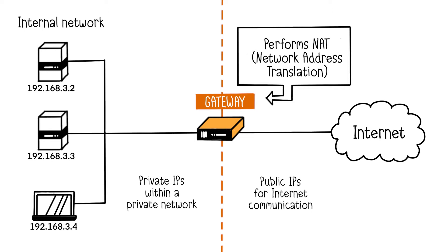In our example, NAT saves three public IP addresses since the three machines on this network share a single public address — the gateway's address — instead of each having a unique IPv4 address. In real-world scenarios, this optimization is significantly more impactful.